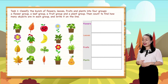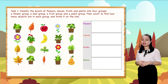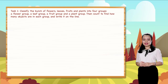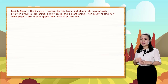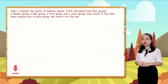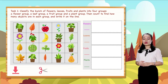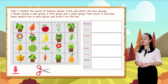Then count to find how many objects are in each group and write it on the line. In order to start, pause this video to download and print the worksheets below. Then prepare scissors — we will need them in this task. When you finish, replay the video to continue.